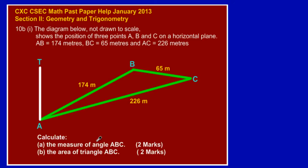They're asking us to calculate the measure of angle ABC, and that's an easy two marks. This is pretty straightforward — they have given us a triangle with all three sides. The letter B is in the middle of 'ABC', suggesting the angle is located at point B, and I'm marking that angle for you so you can see clearly.